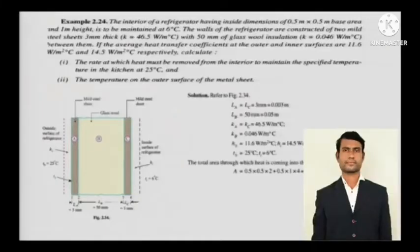The interior of a refrigerator having inside dimensions of 0.5 meters by 0.5 meters base area and 1 meter height is to be maintained at 6 degrees Celsius. The walls of the refrigerator are constructed of two mild steel sheets, 3 mm thick, with k equals 46.5 watts per meter degree Celsius, with 50 mm of glass wool insulation between them.